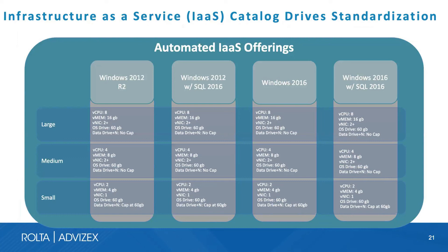We define a service catalog up front as part of the automation design. In this example, various Windows Server offerings are provided in small, medium, and large sizes across four different Windows versions — creating 12 catalog items to choose from. If you need a Server 2012 R2 with specific CPU and RAM configuration, you push that button in the service catalog, and it automatically deploys that server infrastructure for you.